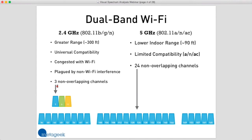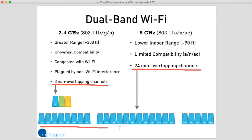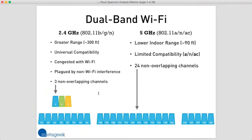Perhaps the biggest problem is that there are only three channels that do not overlap in the 2.4 gigahertz band — channels 1, 6, and 11 are the only three non-overlapping channels we have to work with. Whereas in the 5 gigahertz band, we have 24 non-overlapping channels. The amount of channels shown here is completely to scale: the 2.4 gigahertz band is tiny compared to the 5 gigahertz band, and that's something we need to be really careful about when deploying a wireless network.